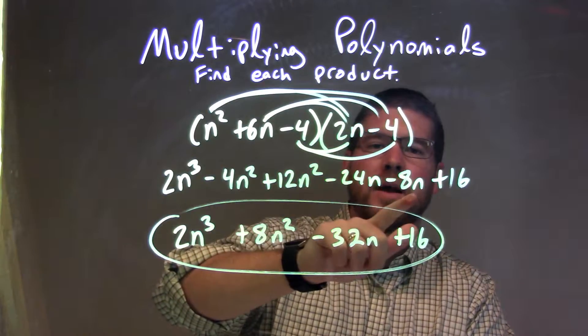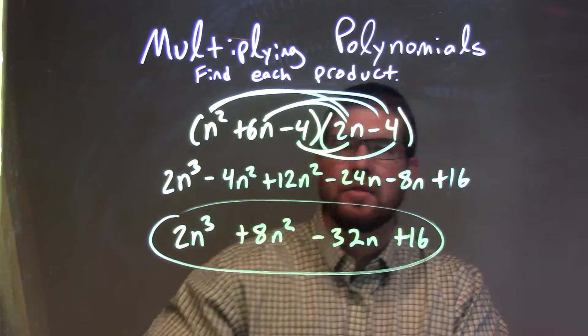Minus 4 times 2n was minus 8n, and minus 4 times minus 4 was a positive 16.